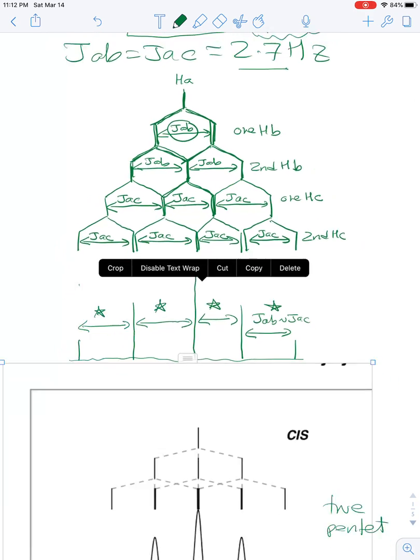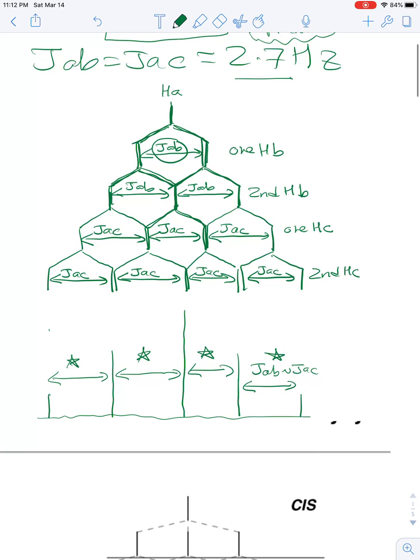As a result, we get this nice pentet that I've shown here. I've redrawn it here. You get those elements of the pentet with the 1 to 4 to 6 to 4 to 1 heights on it. So again, 1 to 4 to 6 to 4 to 1 heights.